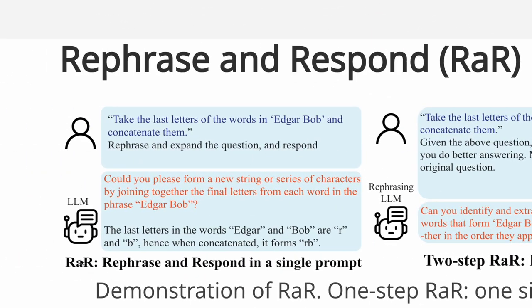So this is the first one where the idea is to use just single prompt for everything. So let's say if you say take the last letter of the words in Edgar Bob and concatenate them, and then you write down rephrase and expand the question and respond.